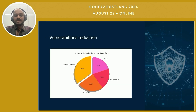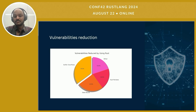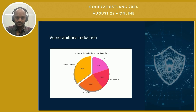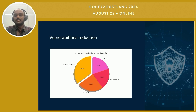Rust is highly effective in reducing several critical vulnerabilities that are common in system programming. As shown in the chart, Rust significantly reduces issues like buffer overflows, which account for 35% of vulnerabilities. It also addresses data races, which make up 25%, and null pointers, which represent 20% of vulnerabilities. By eliminating these vulnerabilities at compile time, Rust helps developers write more secure and reliable code, reducing the chances of critical bugs in production systems.